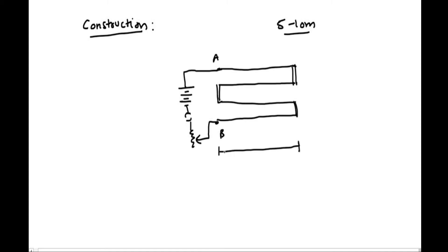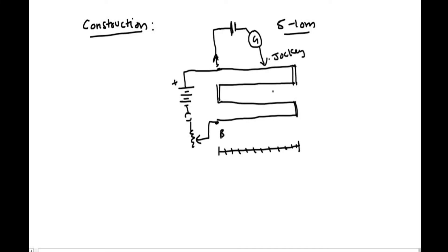We connect point A with a battery through a key and a rheostat, and connect the other end at point B. There is a meter scale placed alongside to measure the length of the wire. To measure the potential of a cell, we connect its positive end to point A and the negative end through a galvanometer and a jockey, which we slide over the potentiometer wire to find the null deflection point.